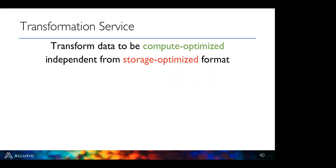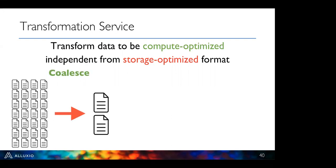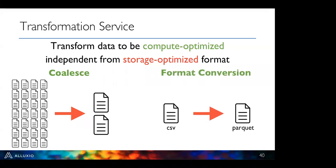The Alluxio transformation service transforms data from storage-optimized formats into compute-optimized formats, providing physical data independence. Two transformations are available in the developer preview: coalesce, which merges many small files into fewer files — important because too many files can make Presto queries inefficient — and format conversion, specifically converting CSV files to Parquet. Parquet is more compute-optimized since CSV is plain text and harder to parse. These transformations convert data to be more compute-optimized without changing the underlying storage.